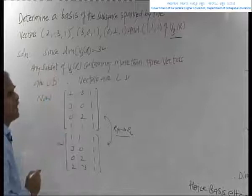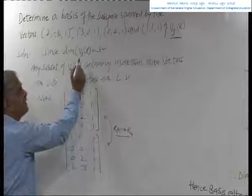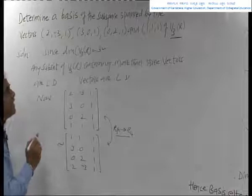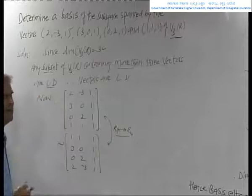First, note that the dimension of V3r is 3, because it has 3 elements. Now, any subset of V3r containing more than 3 vectors is clearly linearly dependent.